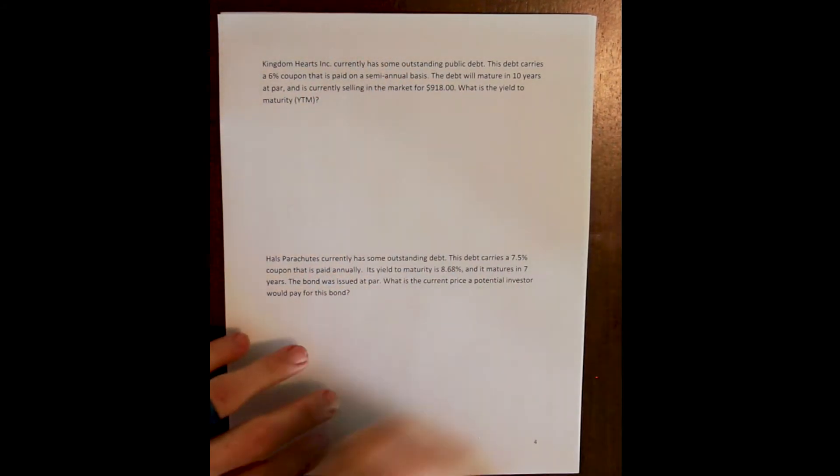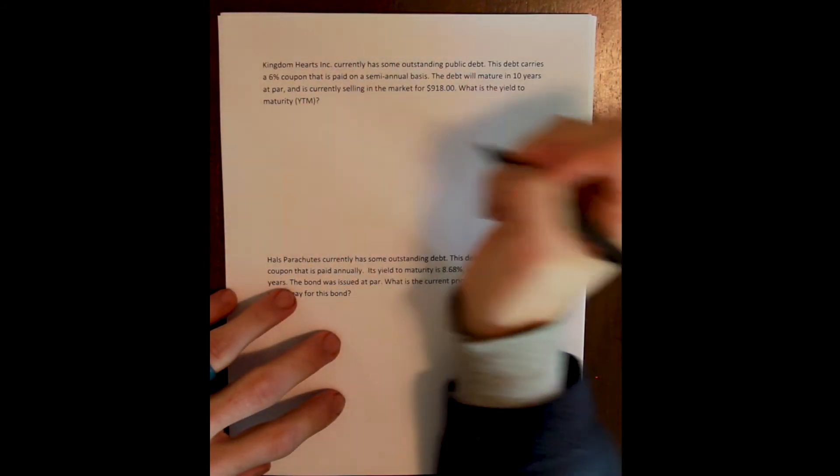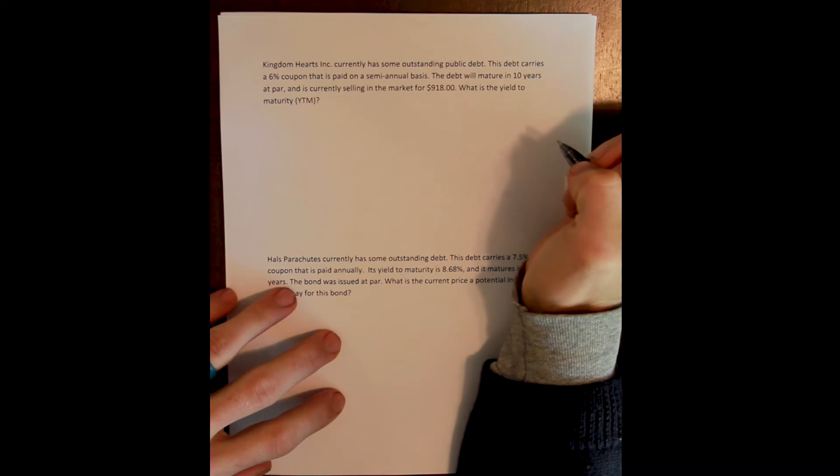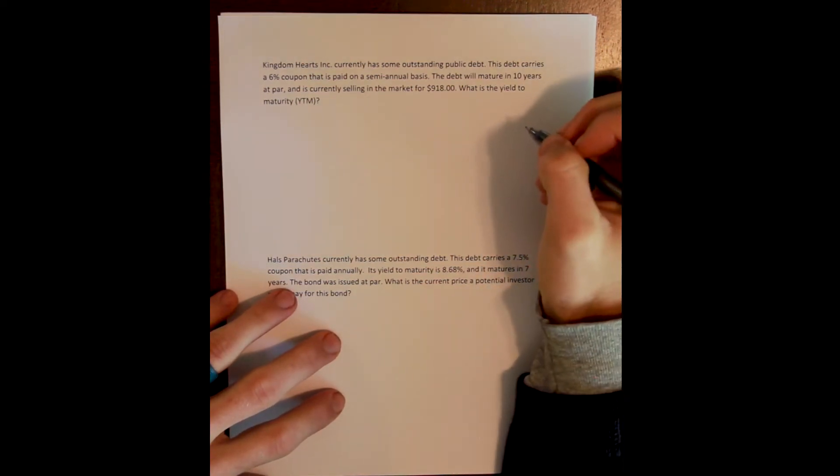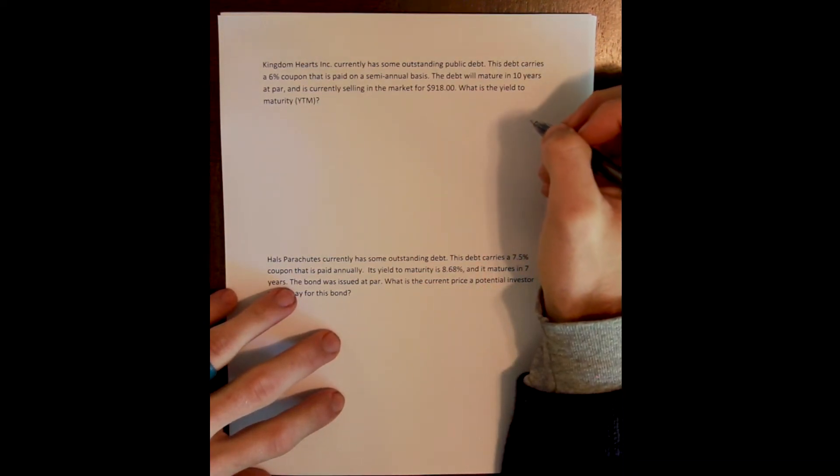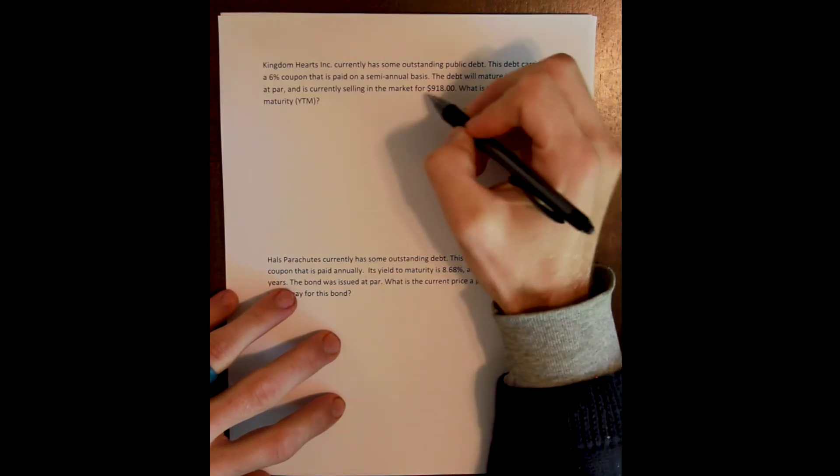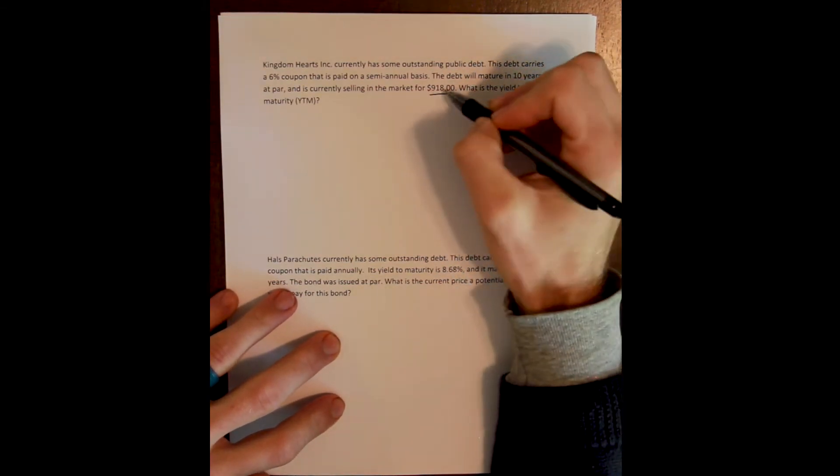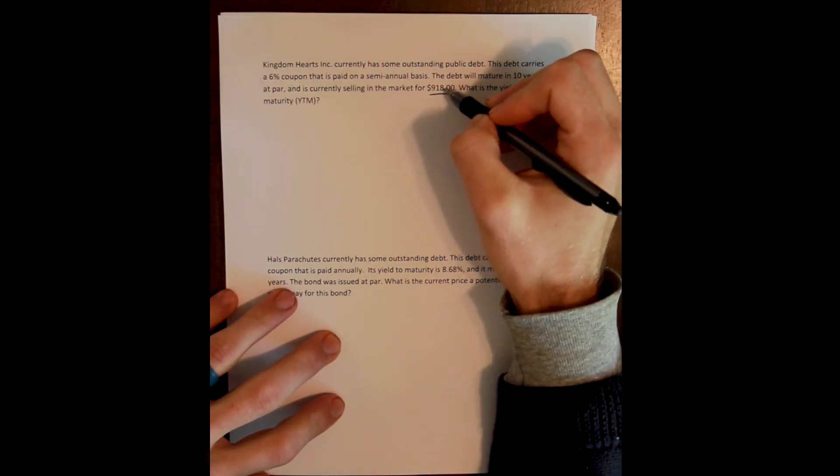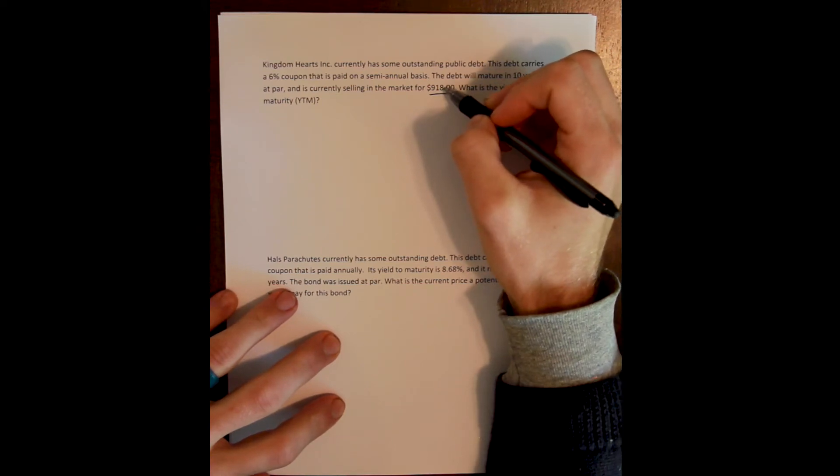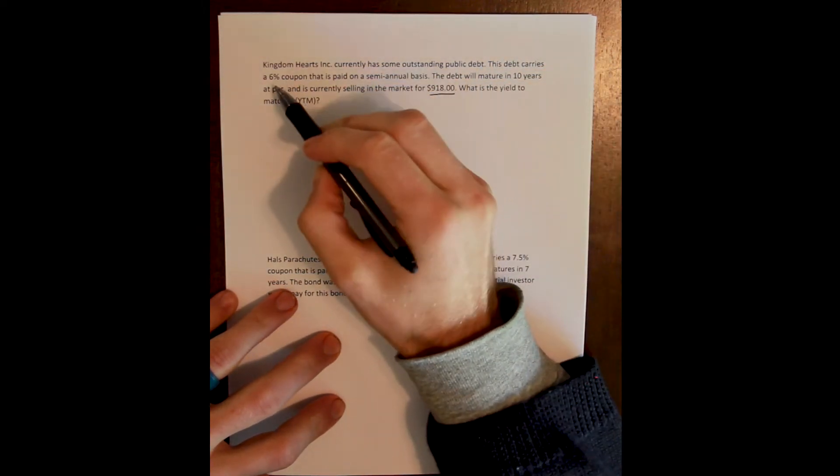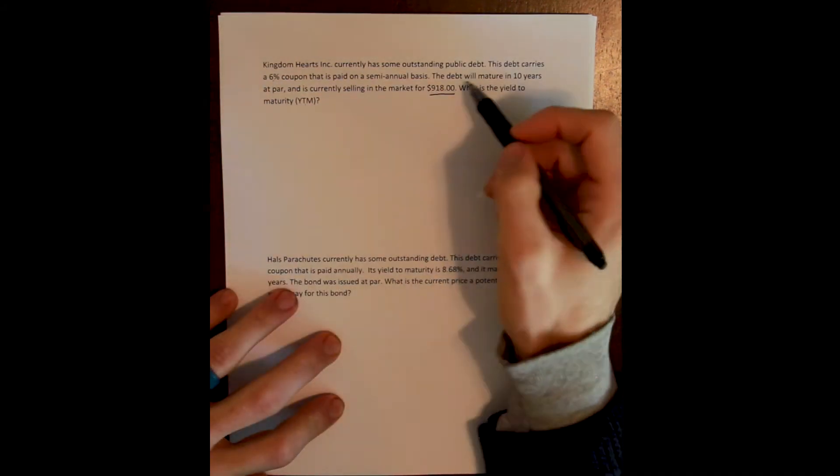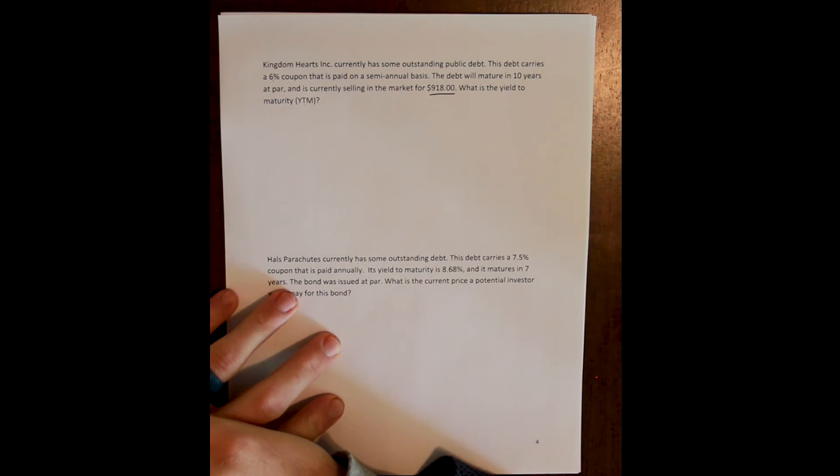So we are given everything we need to know in the problem. We know that prices and interest rates move in opposite directions. So if the current price is less than the face value, that means that the current interest rate in the market, the yield to maturity, has got to be greater than the coupon we're being paid because that's why there is a discount on this bond.